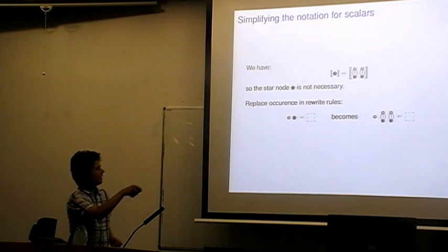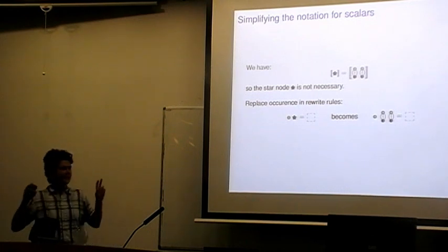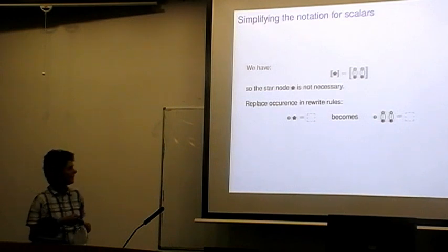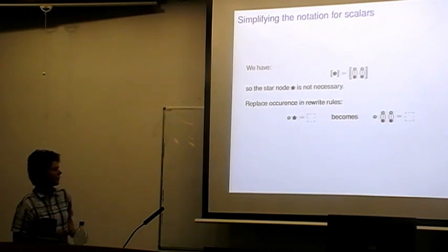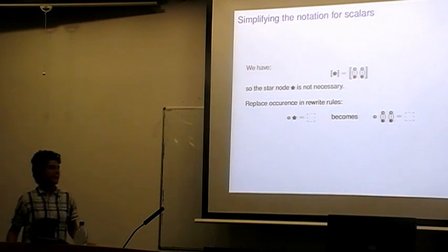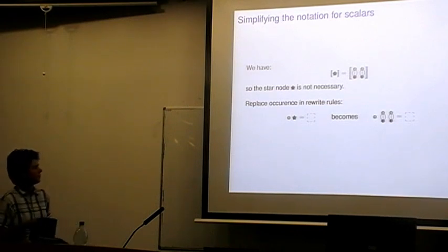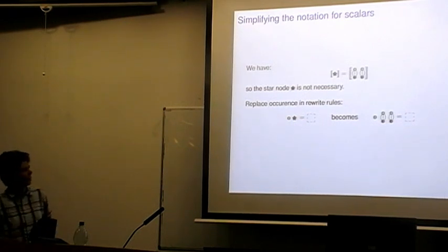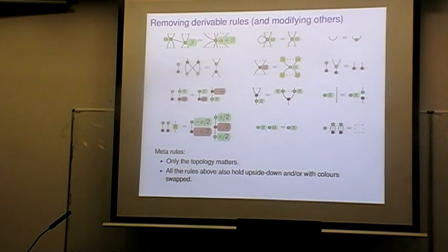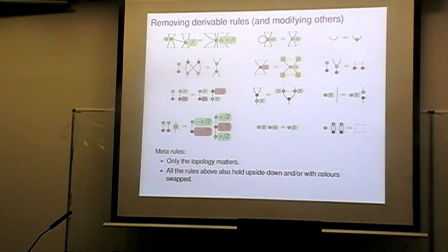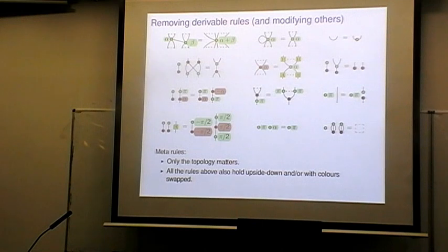The dashed square is basically a 'space intentionally left blank' symbol. A green spider with no legs corresponds to an empty diagram representing the number one. Since the star node has the value one-half, this other construction — the spider with no legs — has the value two. Going back to the rewrite rules, I've already implemented this simplification by replacing the star node with this other diagram, and I'm now going to go through this set of rules one by one and tell you whether we can remove each rule or not.